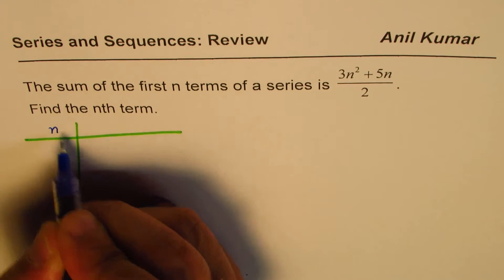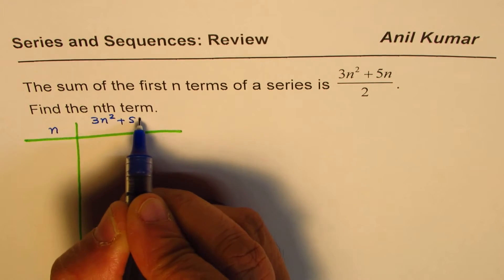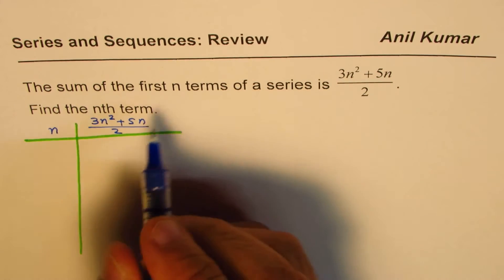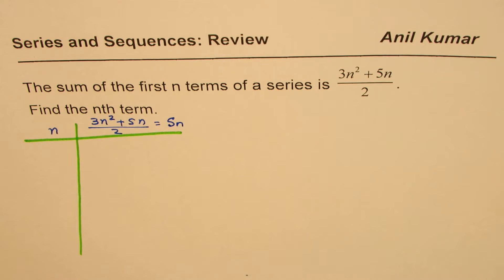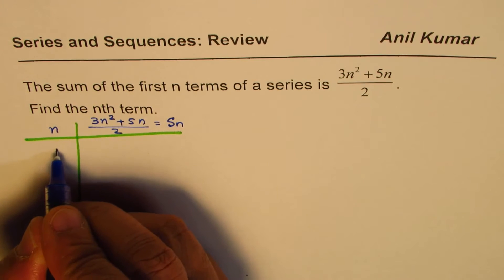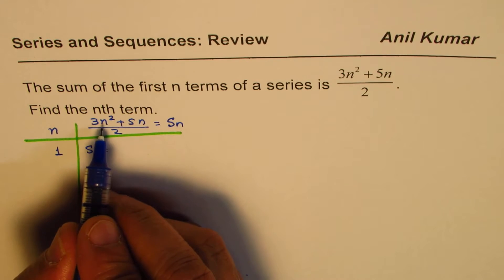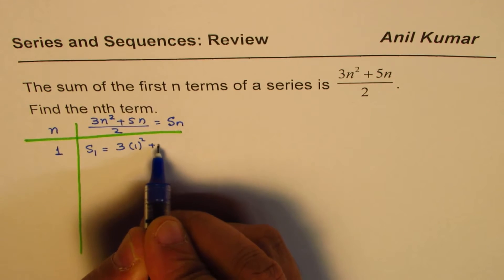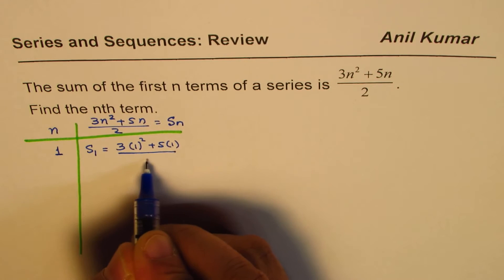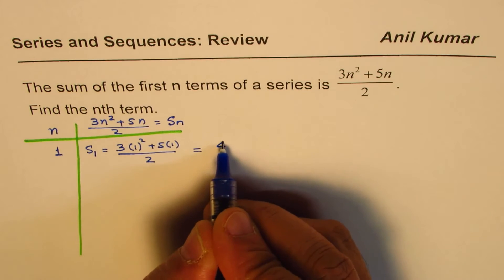We'll write different values of n and then calculate what is 3n squared plus 5n divided by 2. Remember, this is actually the sum — the sum of the first n terms. So if I write n equals 1, then I get the sum of the first term, which is the first term itself. Replacing n with 1: 3 times 1 squared plus 5 times 1, divided by 2, gives 3 plus 5 = 8, divided by 2 = 4. So we get 4.